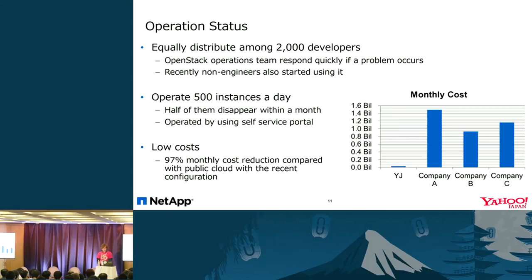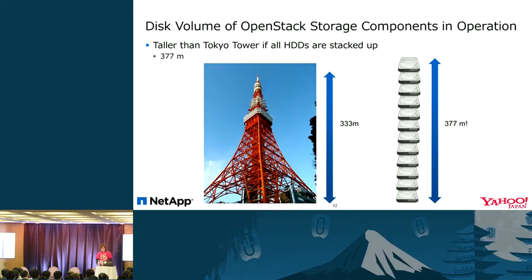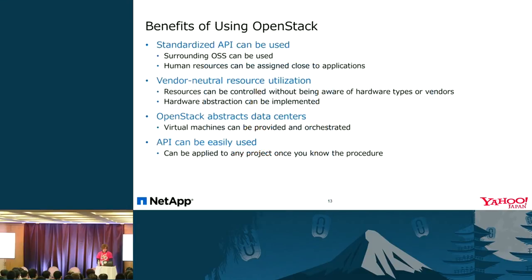Here is a tip about our operation. Under our OpenStack, we use the storage component consisting of Cinder and a small-scale Swift. If we stacked all the disks, they would add up to 377 meters — taller than Tokyo Tower at 333 meters. The benefits of using OpenStack include: first, standardized API utilization, which allows us to leverage surrounding OSS tools and allocate more people to application-layer work.